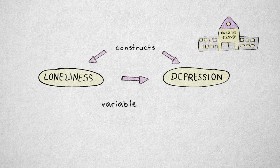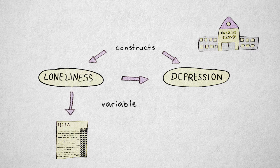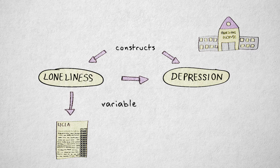I could administer the UCLA Loneliness Scale. This scale is a 20-item questionnaire consisting of items like, 'I have nobody to talk to.' The variable loneliness now refers to loneliness as expressed through scores on the UCLA scale.